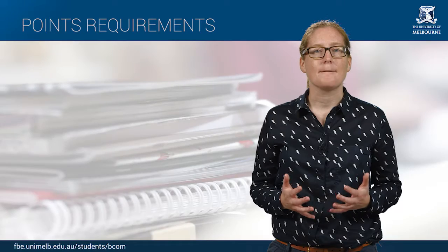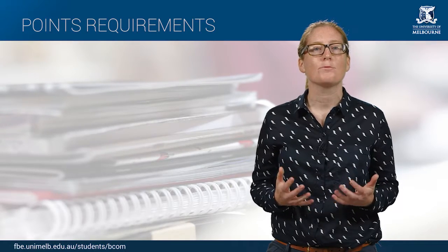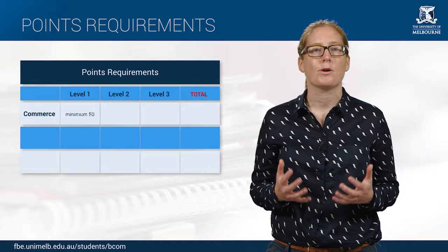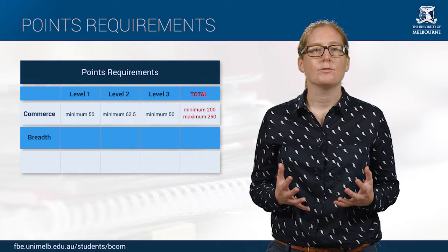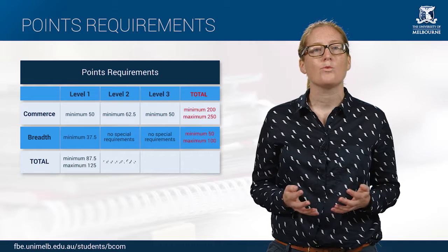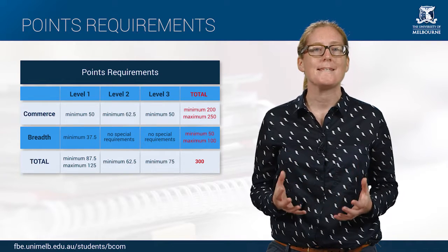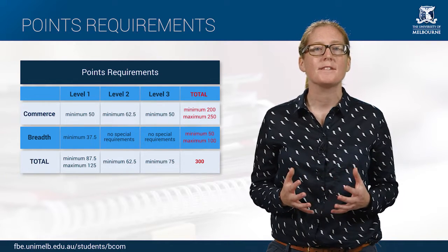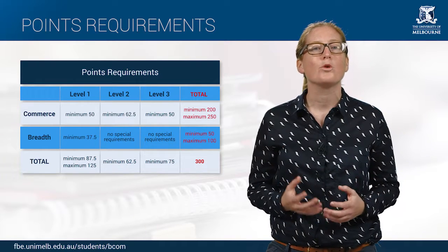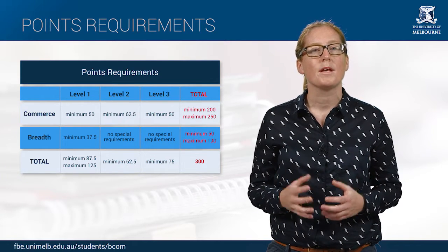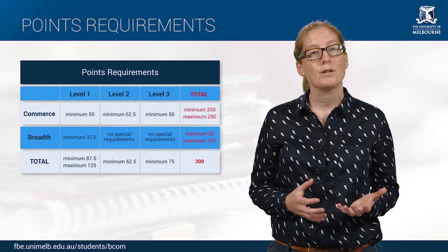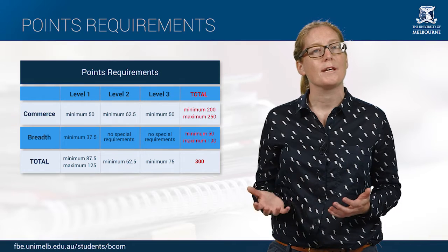As you can see there is some flexibility in how you plan your BCom. However you do need to meet set point requirements at each level. For example, you must do at least seven level one subjects and no more than ten. Level one subjects are generally subjects that you will do in your first year. Level two subjects in your second year, and level three subjects in your third year.